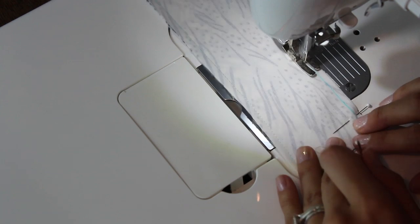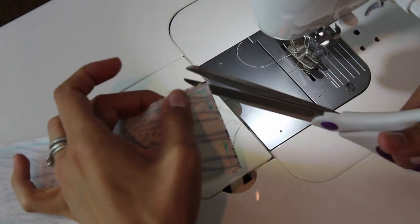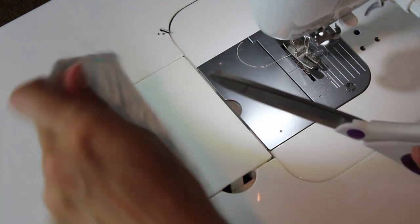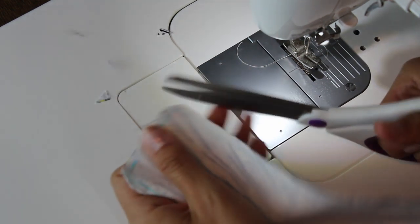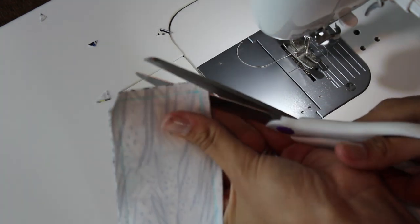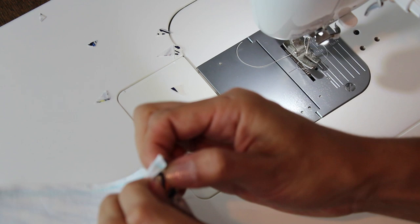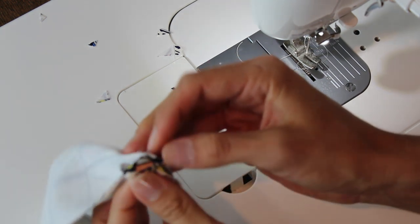And then here we are using a coordinating thread. I'm just using a light green. Clip your corners. Sometimes people get a little confused on this step. You don't want to clip through your stitches. You just want to clip near your stitches in order so that the points can come out really nice and sharply. It gives a nice finished look.